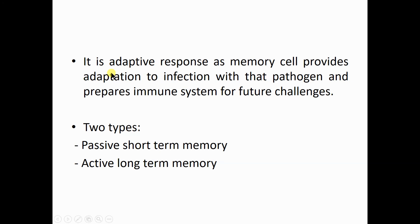This is actually an adaptive response. Once the immune system becomes exposed to a particular type of foreign particle, it produces memory cells. These memory cells become adapted to that type of foreign particle to resist infection against that particular antigen. Memory cells provide adaptation to infection with that particular pathogen and prepare the immune system for future challenges with the same types of pathogen.